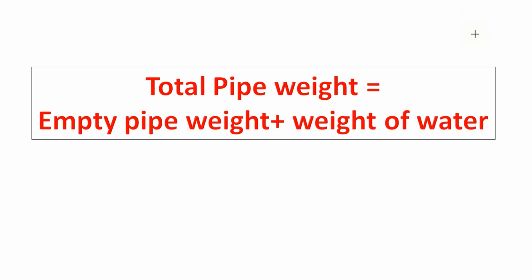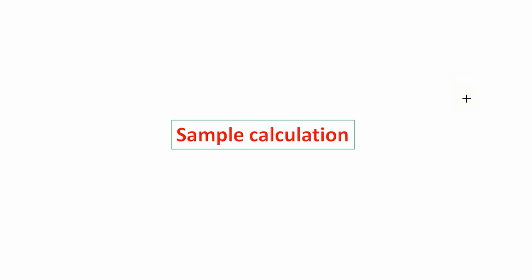Hello friends, I am engineer Nasir. In this video we will study how to calculate the total pipe weight. Total pipe weight is equal to the empty pipe weight plus the weight of water inside the pipe. Let us do a sample calculation to calculate the total pipe weight.